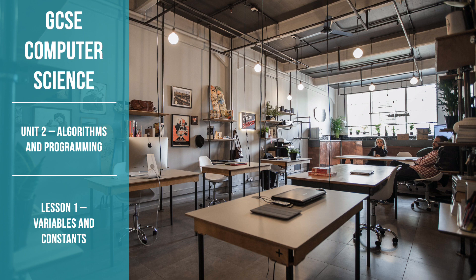So as I said, this is the OCR GCSE Computer Science series of work. We're looking at Unit 2, Algorithms and Programming, and this lesson looks at variables and constants.